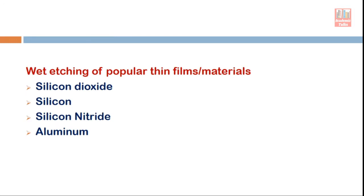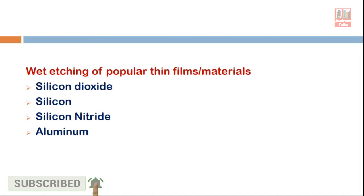The main controlling factors that decide the rate of reaction are concentration of reactants, time of reaction, and reaction temperature. Today we will see how to carry out etching of the most popular materials used in IC fabrication: silicon dioxide, silicon, silicon nitride, and aluminium. Silicon dioxide is very important because it acts as a mask for diffusion or ion implantation.